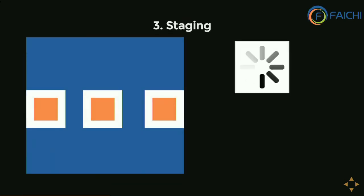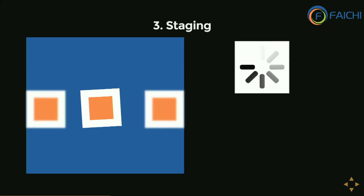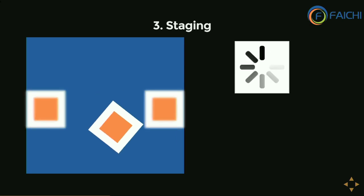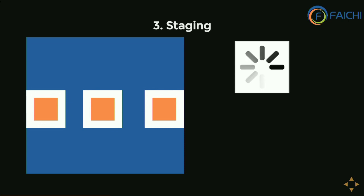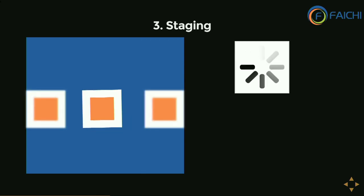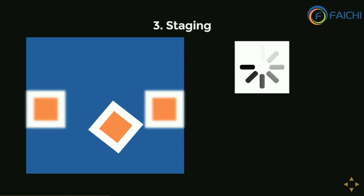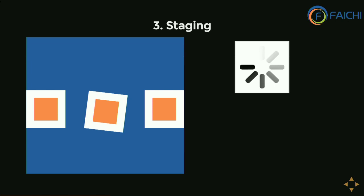The next one is the staging principle. On a website, sometimes you want the user to focus on a particular element. When plenty of elements are moving, it is difficult for the user to spot a specific one. But when every element is static and only one is moving, it is easy to spot. The best example is a loader icon. The most popular example is a modal pop-up window, where we add a back layer behind the pop-up to restrict the user from seeing other elements and force focus on the pop-up.